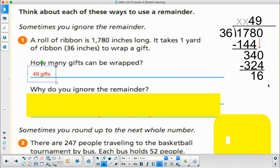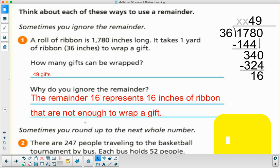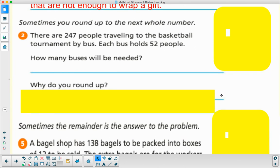Why do I ignore the remainder? The 16 are 16 inches left of the ribbon. I cannot wrap another gift with only 16 inches, and I can't wrap part of a gift. The remainder is 16. It represents 16 inches of ribbon that are not enough to wrap the gift. That would be a case where I just ignore those 16 inches. I have to think of what does the remainder represent.